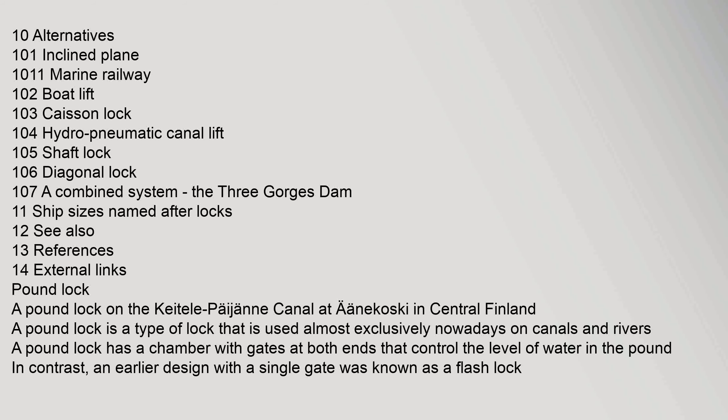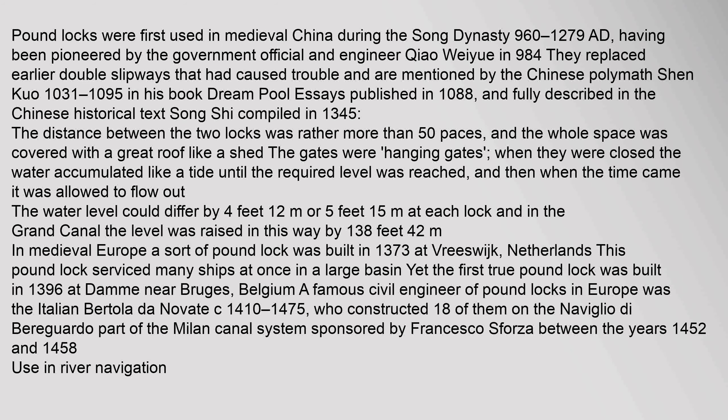A pound lock is a type of lock used almost exclusively nowadays on canals and rivers. A pound lock has a chamber with gates at both ends that control the level of water in the pound. In contrast, an earlier design with a single gate was known as a flash lock. Pound locks were first used in medieval China during the Song Dynasty (960–1279 AD), having been pioneered by the government official and engineer Qiao Weiyue in 984. They replaced earlier double slipways and are mentioned by the Chinese polymath Shen Kuo (1031–1095) in his book Dream Pool Essays.